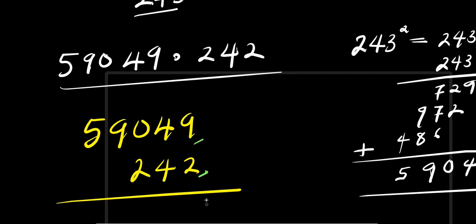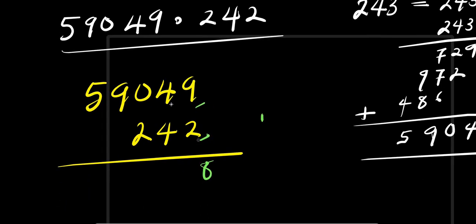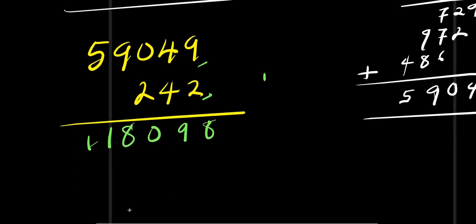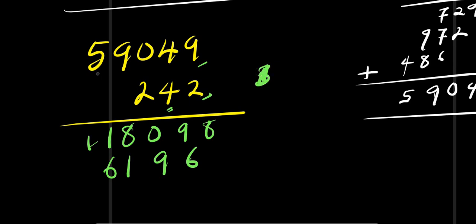Multiplying by 2: 2 times 9 is 18, carry 1; 2 times 4 is 8 plus 1 is 9; 2 times 0 is 0; 2 times 9 is 18, carry 1; 2 times 5 is 10 plus 1 is 11. Then multiplying by 4: 4 times 9 is 36, carry 3; 4 times 4 is 16 plus 3 is 19, carry 1; 4 times 0 is 0 plus 1 is 1; 4 times 9 is 36, carry 3; 4 times 5 is 20 plus 3 is 23.